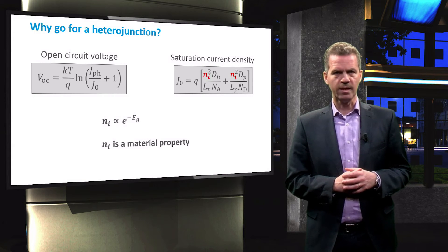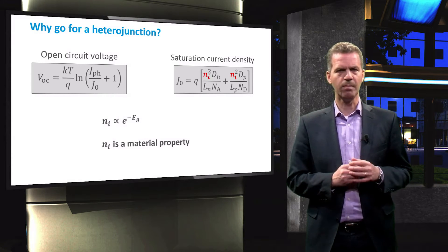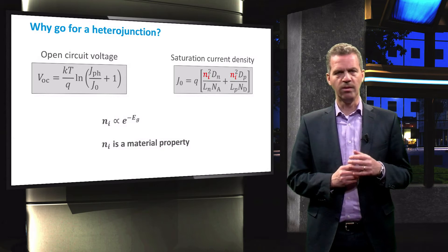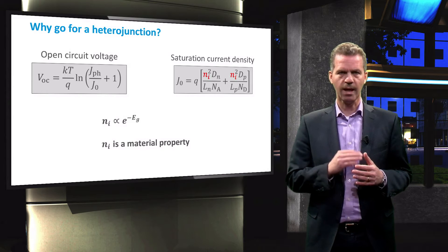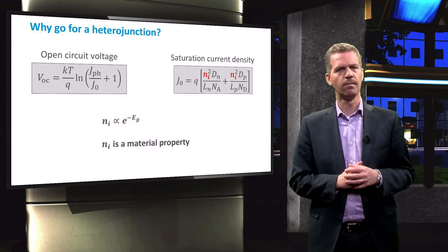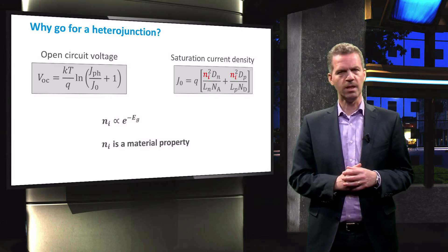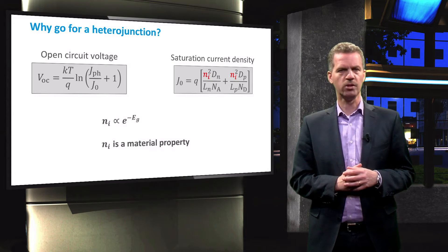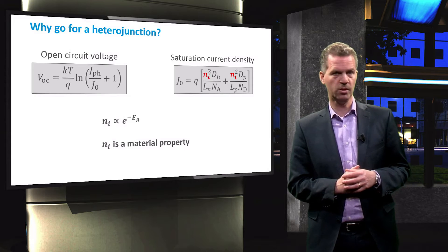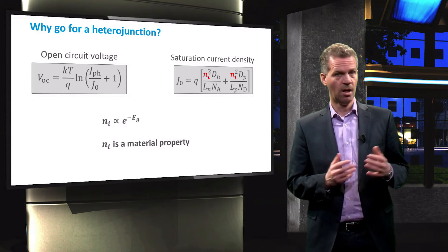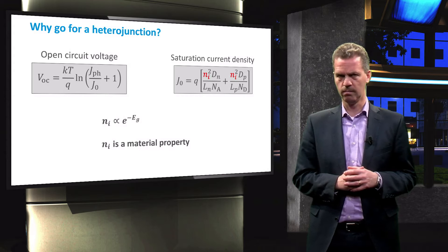This gives us the tantalizing prospect to change the open circuit voltage by controlling the saturation current density. In particular, we can see that if we reduce J0 by increasing the band gap of either the n-type or p-type material, the open circuit voltage of the solar cell can be increased. On top of that, changing the band gap of one of the materials offers us the opportunity to control the absorption of light and optimize the current generation. So there are plenty of arguments to look more closely at the heterojunction.